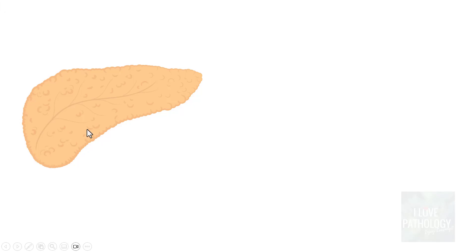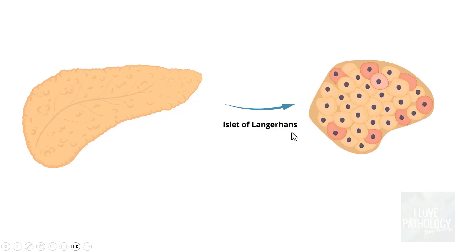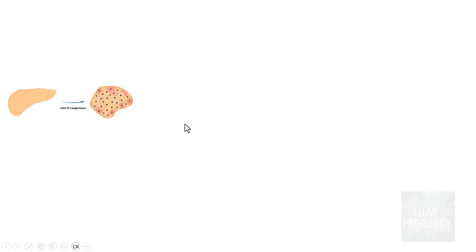This is an illustration of the pancreas. These small areas are known as islets — the islets of Langerhans. Each of these islets is a group of cells. We have studied the different types: alpha cells, beta cells, and delta cells. The predominant ones are the beta cells of the pancreas, which are the beta cells of the islets. Let us now see what happens in each of these beta cells.